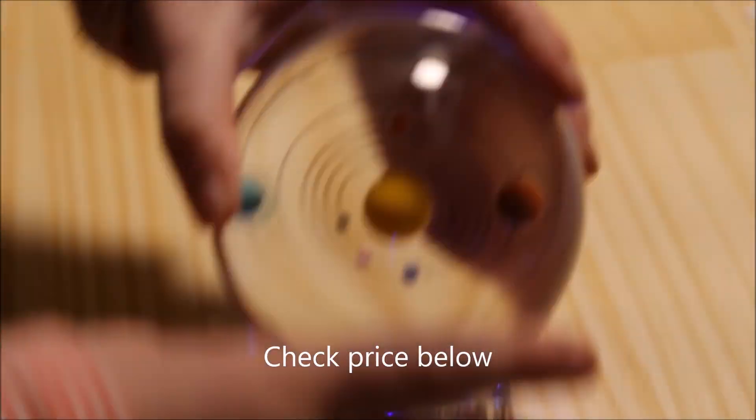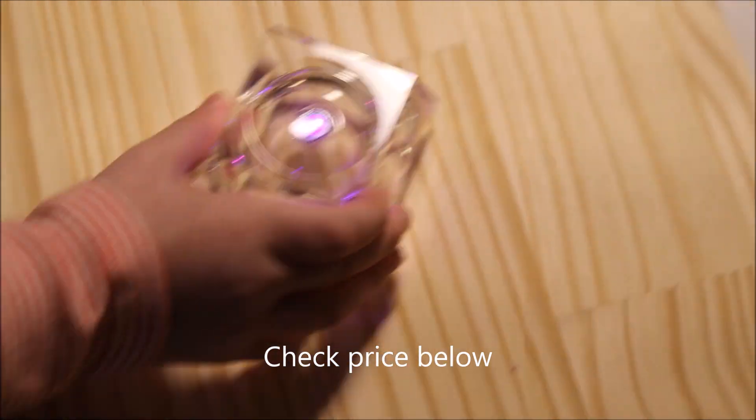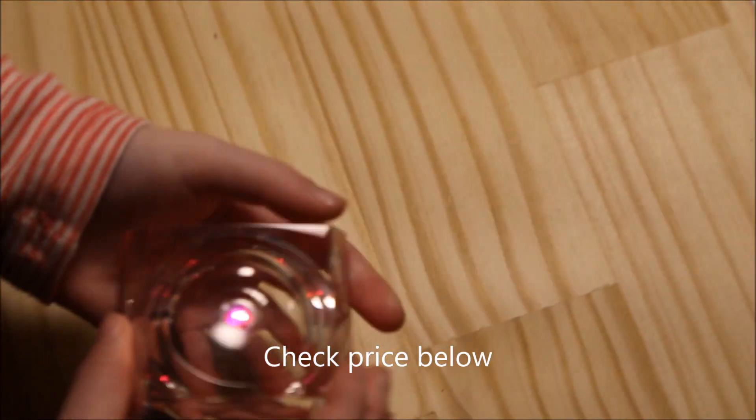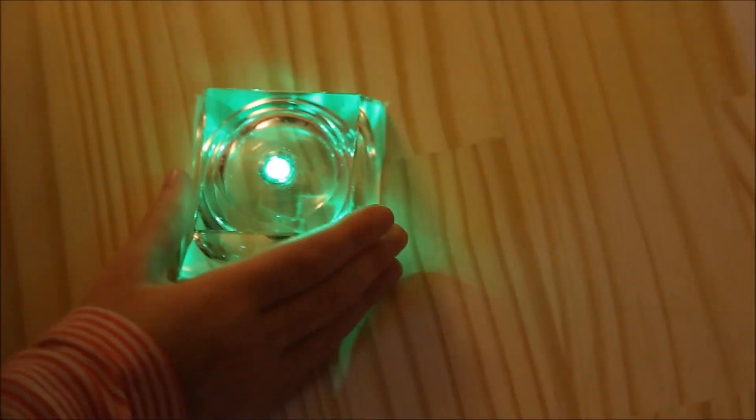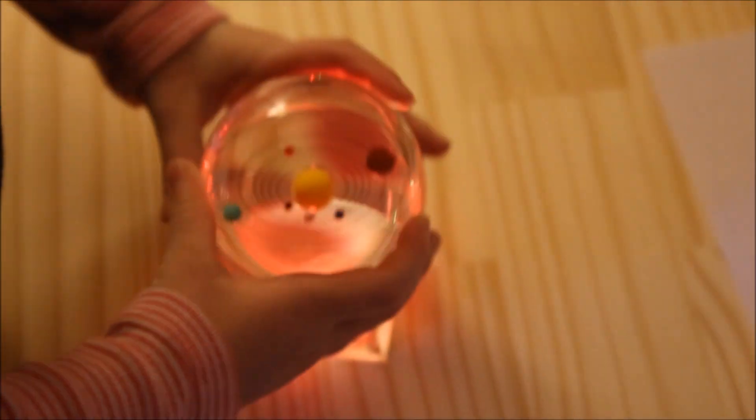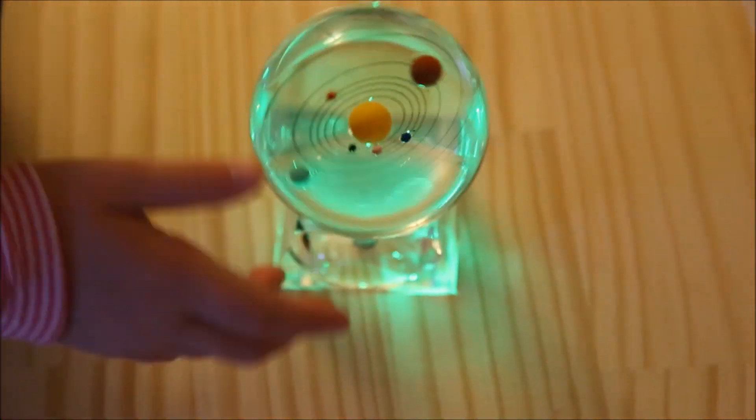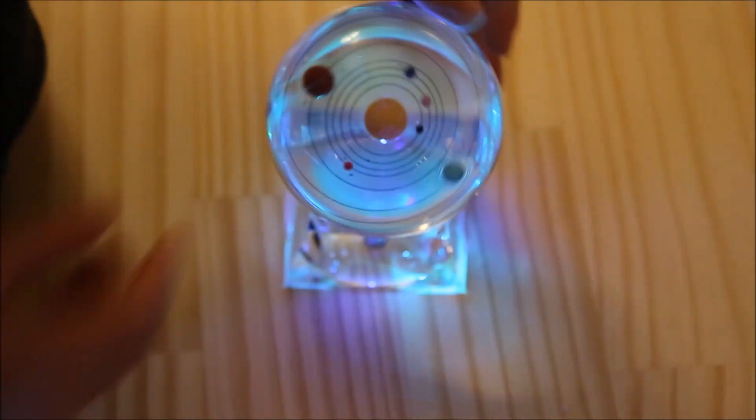And if I take this off, it doesn't show it on the ceiling at all. And then if I put the globe on, it turns different colors on the ceiling.